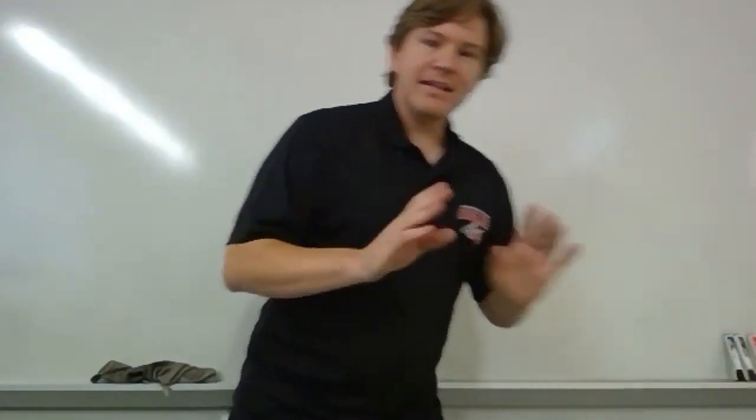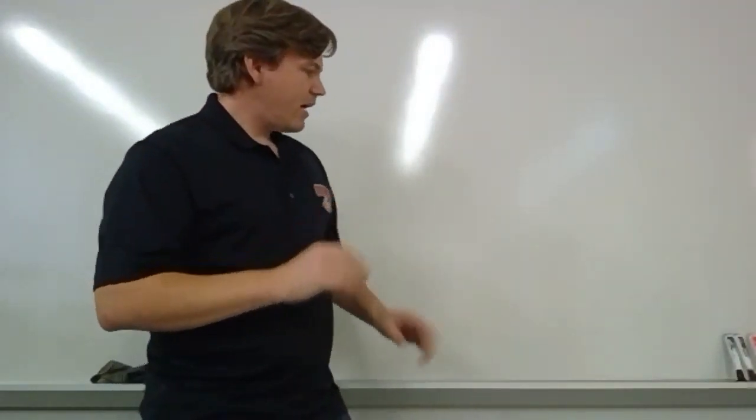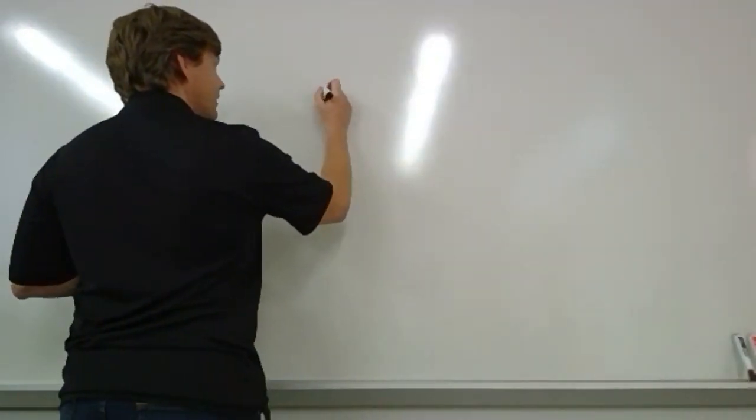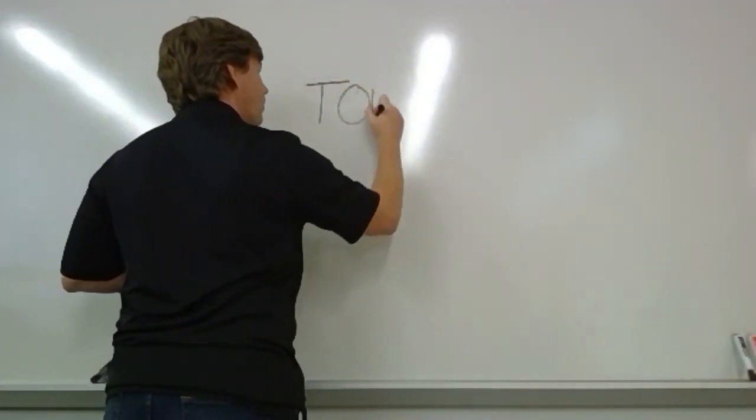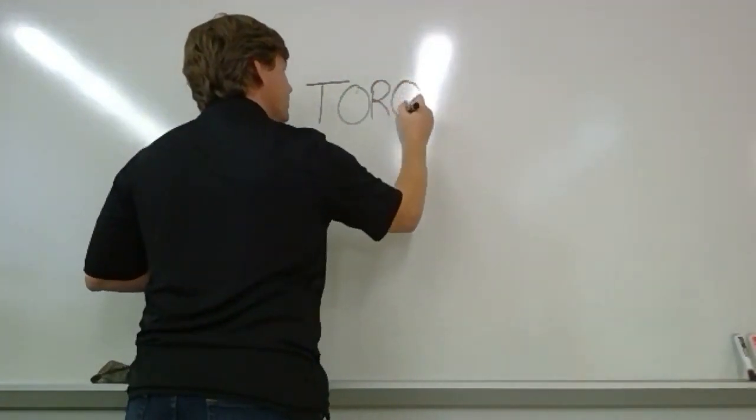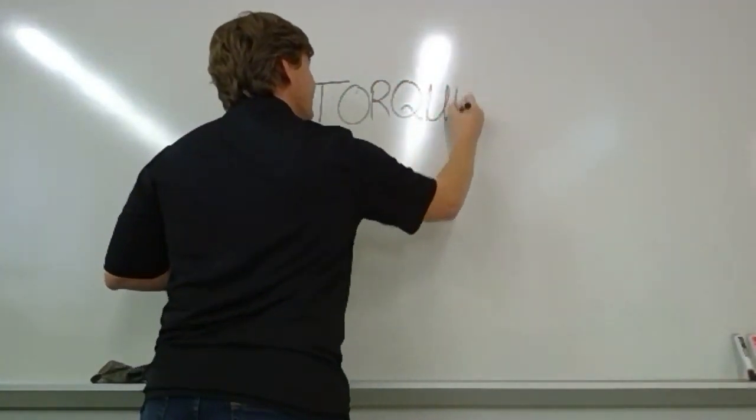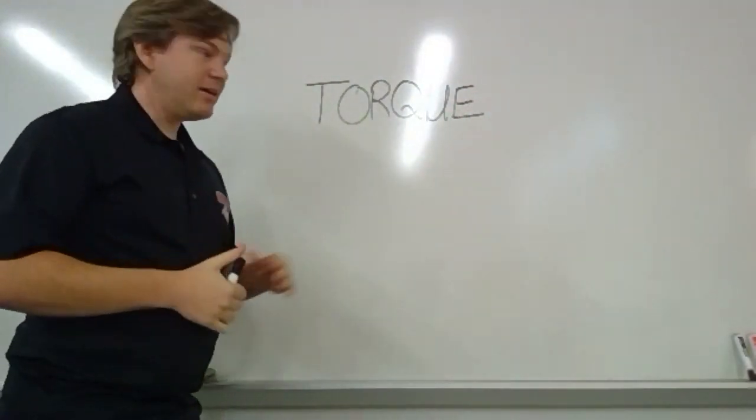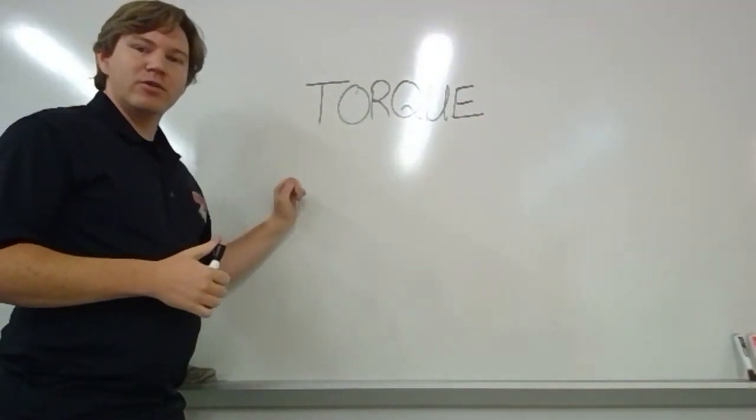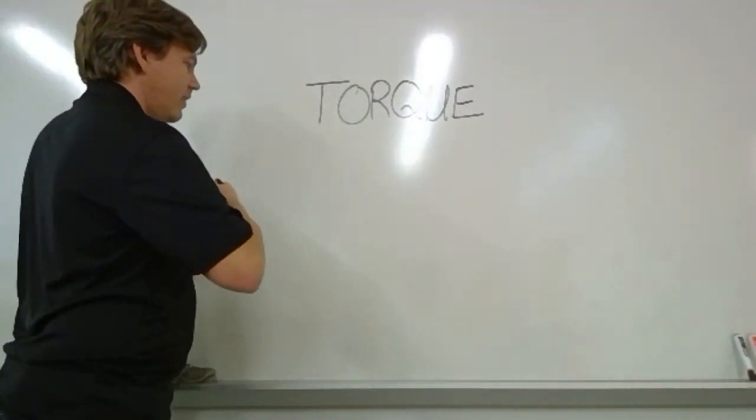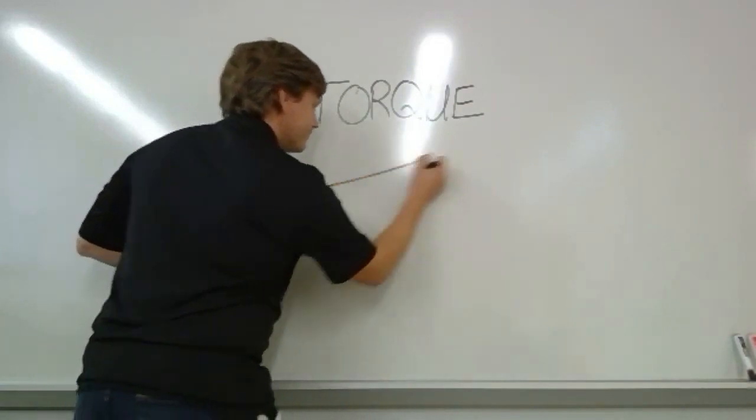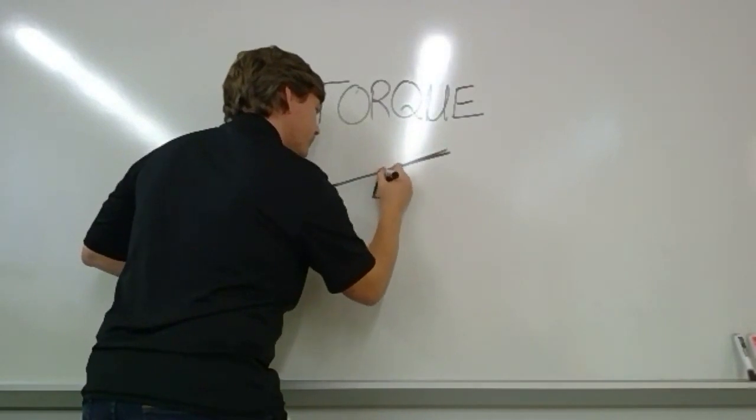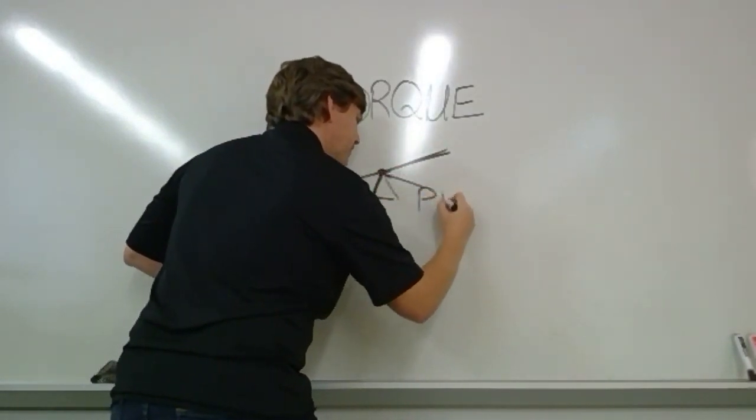Well, the idea of center of mass comes from a principle in physics called torque. And you spell torque T-O-R-Q-U-E. Now the idea of torque is that you are applying force on a lever arm. So if I were to draw out something like a teeter-totter, you have a particular point which we refer to as the pivot.